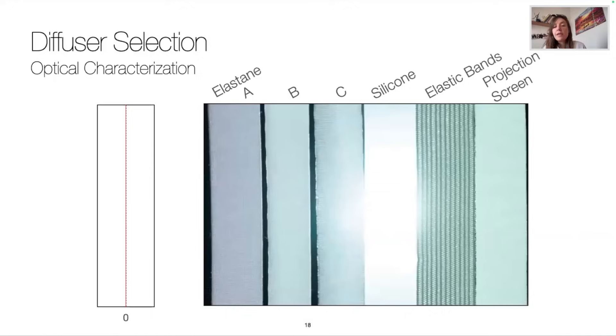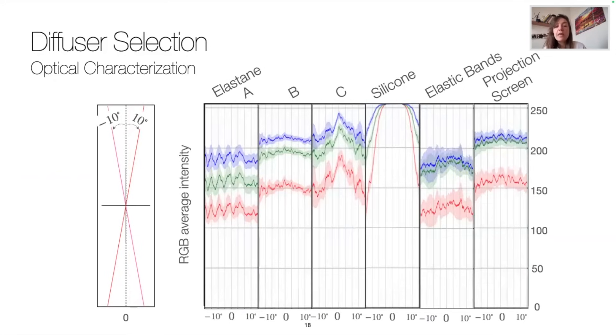Now let's look at the white light. We see that the silicone reflects it, and that the elastic bands show dark lines around the seams. So we decided to measure the RGB average intensities over the spread as a function of the offset angle from the central projection axis.